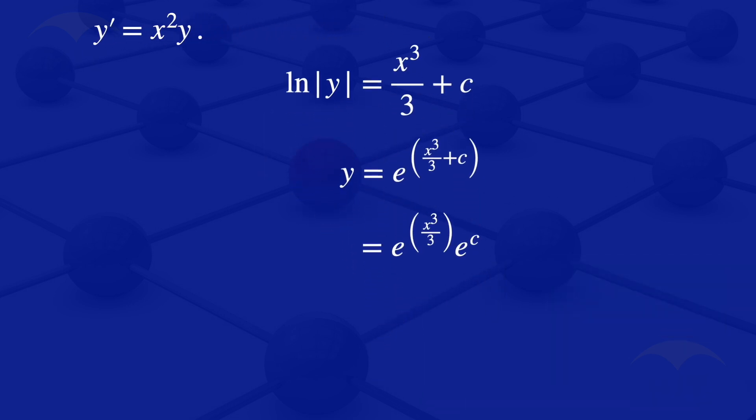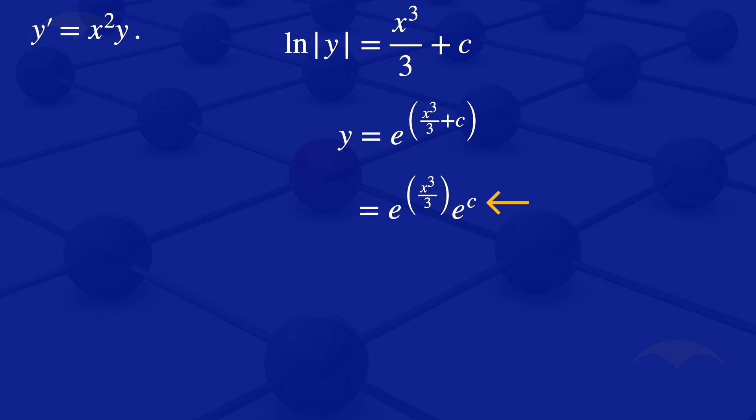So that's the equation that we are having now. But looking at this part there, the exponent of C, the exponent of a constant will just give us another constant.